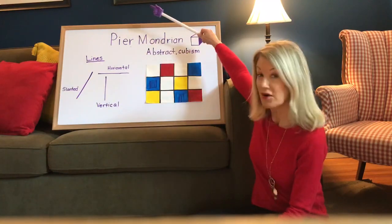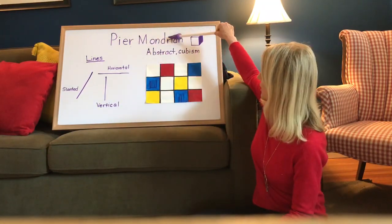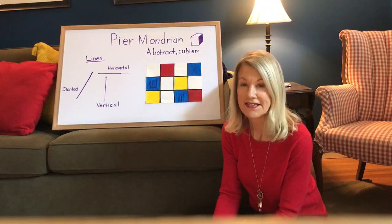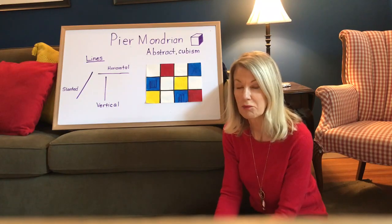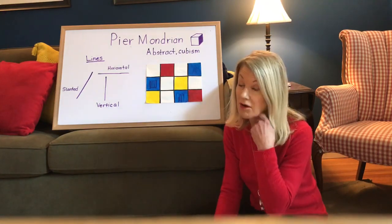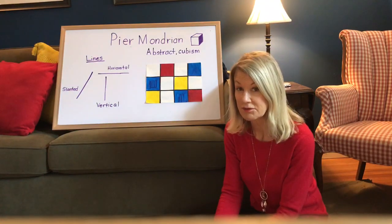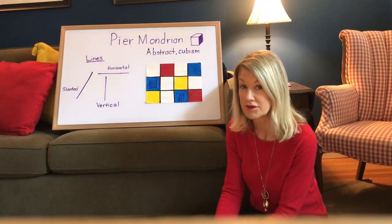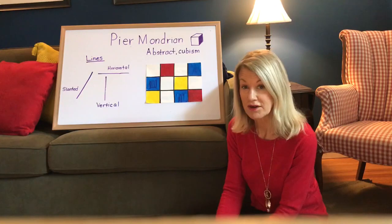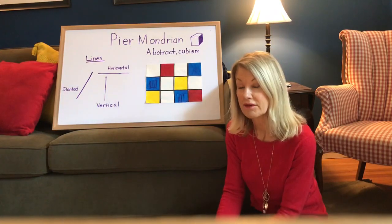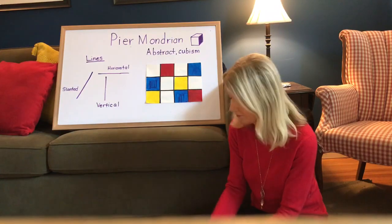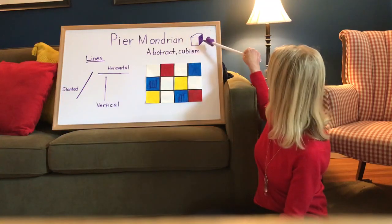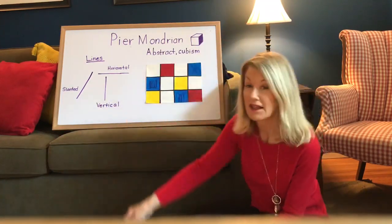Today's artist is Pierre Mondrian — it's a Dutch name. Do you remember yesterday? Kandinsky was a Russian name. Pierre grew up in the Netherlands, which is in Europe across the Atlantic Ocean, and it was well over a hundred years ago. He did abstract art — if you remember what that was yesterday, it's more modern art. He also did something called cubism.